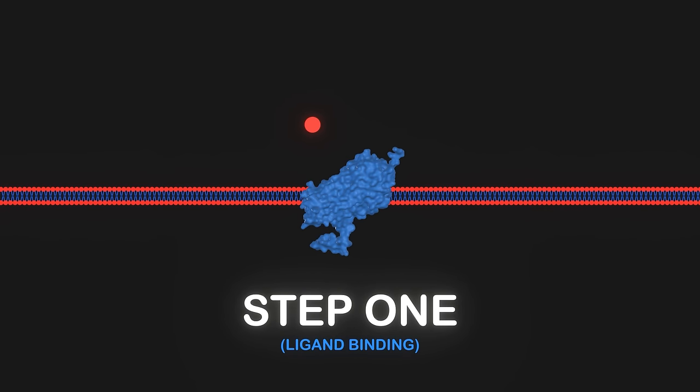The general mechanism of G-protein coupled receptor activation involves the following steps. Step one, ligand binding. When a specific ligand, such as dopamine or acetylcholine binds to the extracellular domain, which is just the part outside of the cell, of a G-protein coupled receptor, it induces a conformational change in that receptor.